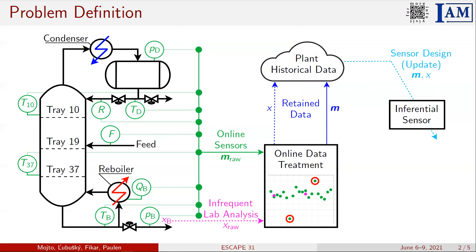The designed inferential sensor is capable of inferring the desired bottom product composition from the measurements of the online sensors. The inferred variable can be subsequently used for online process monitoring or it can be used in advanced process control.